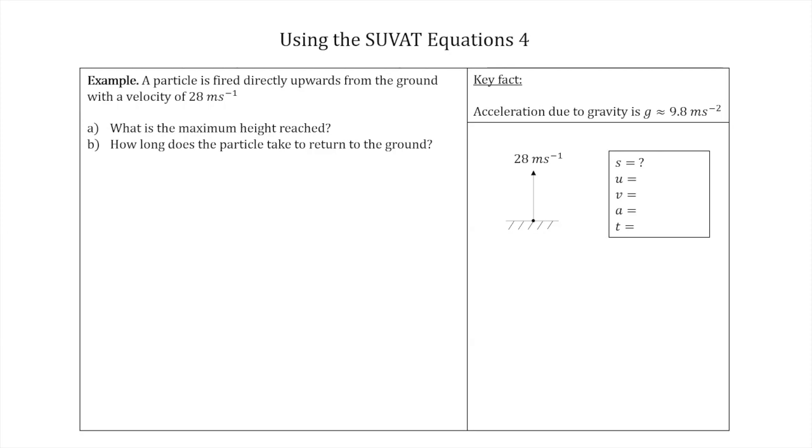We do know its initial velocity, we're told that that's 28 meters per second. For this problem, again if you look at A, we know that its final velocity is zero, because that's when it's at the top of its flight before it starts to fall back down.